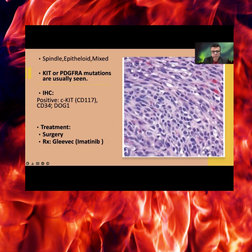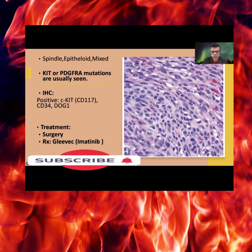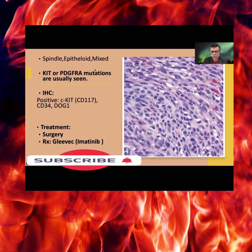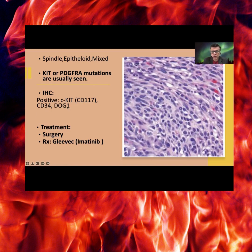Immunohistochemical markers show c-kit or CD117 staining due to KIT mutation, or PDGFRA mutations may be seen. CD34 and DOG1 are other immunohistochemical markers. Treatment includes surgery and Gleevec (imatinib), which is an anti-tyrosine kinase agent.